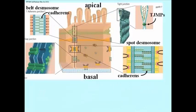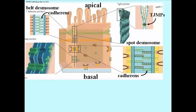Belt desmosomes are the so-called adherence junctions, whereas desmosomes are thought of more like spot rivets. Desmosomes of both sorts are the glue that holds cells together in a tissue. You can see that desmosomes are created when two cells come close to one another and attach to one another by their cadherins.